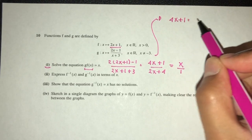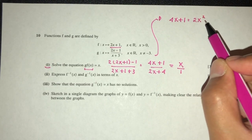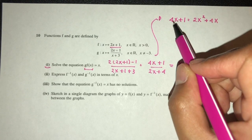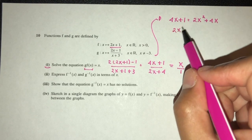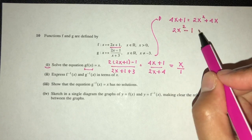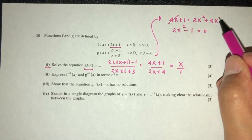4x plus 1, that will be 2x squared plus 4x. Turn everything to one side, you will have 2x squared minus 1 equal to 0. This will cancel out, obviously.